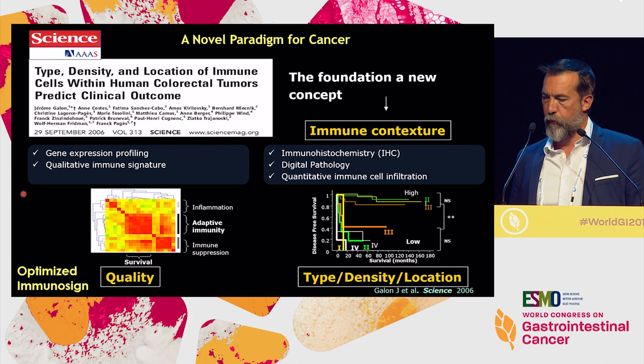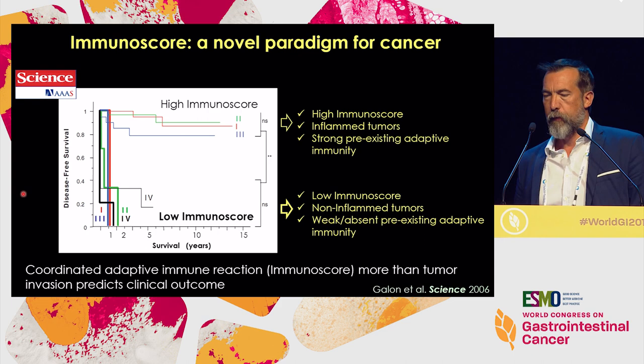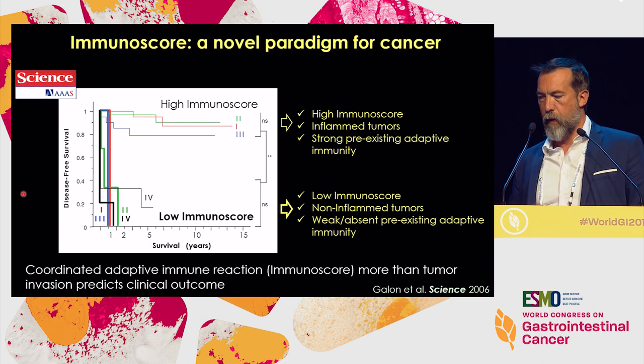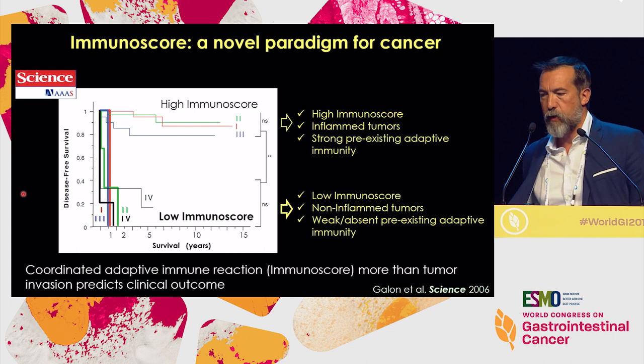What we showed was that patients with a high density of cytotoxic T cells in both tumor regions — the center of the tumor and the invasive margin — were protected from tumor recurrence. With more than 15 years of follow-up, these patients have what we call a high immunoscore: high density of adaptive immune cells in both regions. More than 80% of cases with a high immunoscore don't have tumor recurrence.